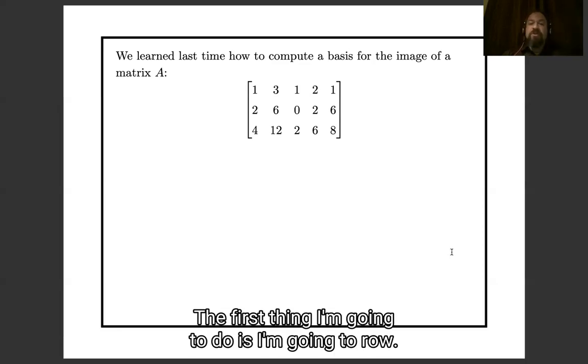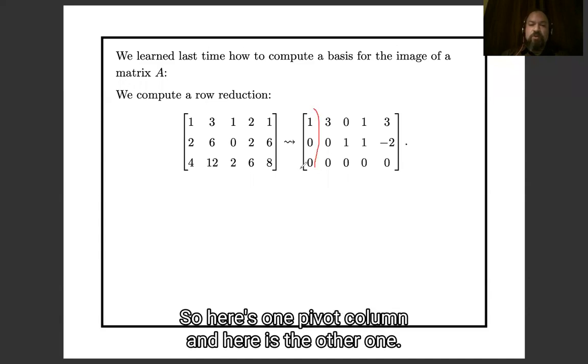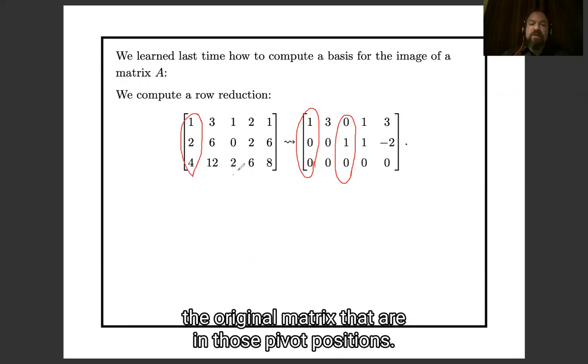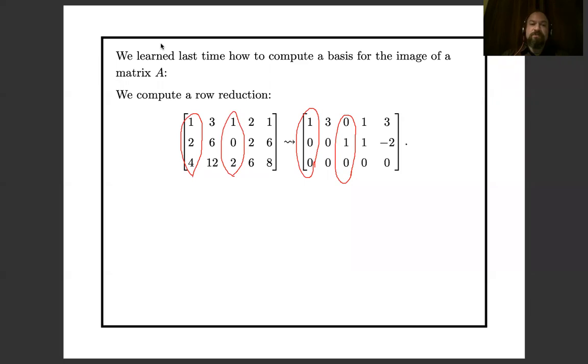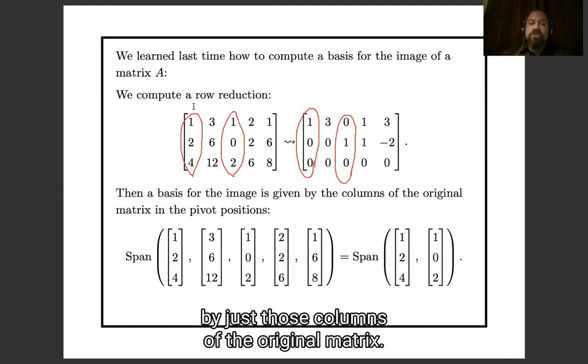The first thing I'm going to do is I'm going to row reduce it. Then I'm going to look at where the pivot columns are. So here's one pivot column and here's the other one. And I'm going to look at the vectors of the original matrix that are in those pivot positions.